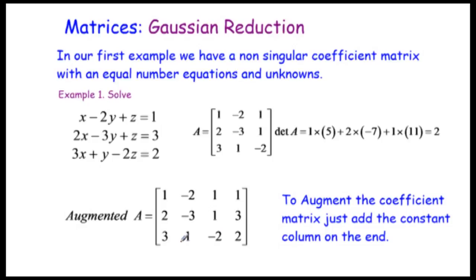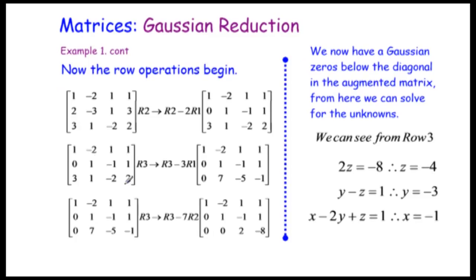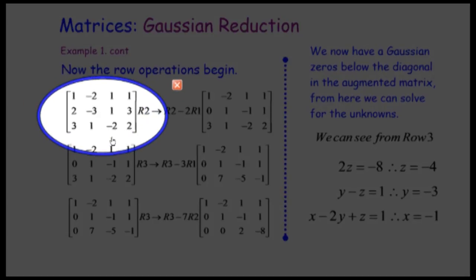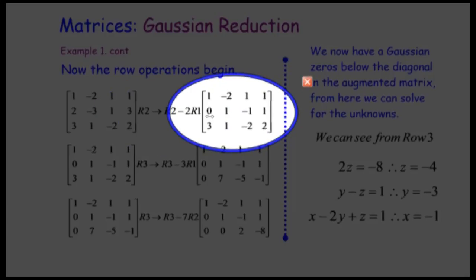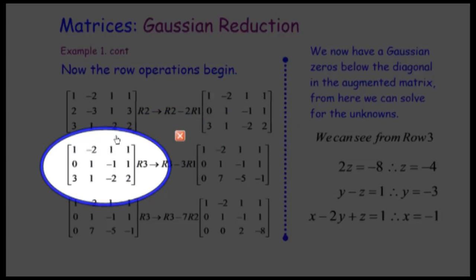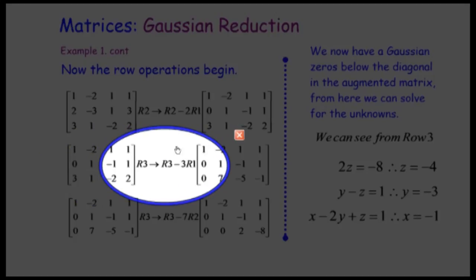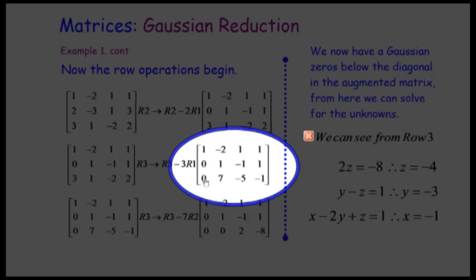Now we start doing row operations. We have the augmented matrix. If you can find a 1 in the first position, that's handy — we can subtract multiples of that row to make the x-position zero in other rows. Row 2 becomes row 2 minus 2 times row 1, giving a 0 in the first position. Then row 3 becomes row 3 minus 3 times row 1, giving another 0.